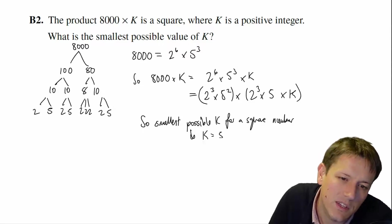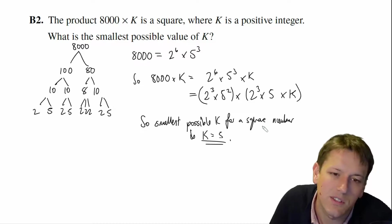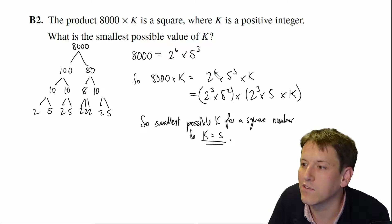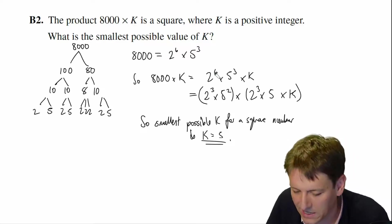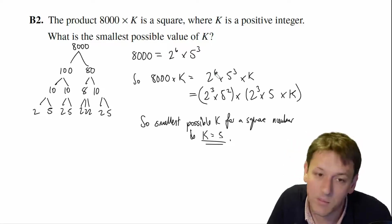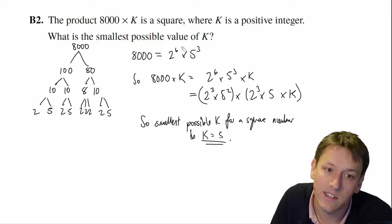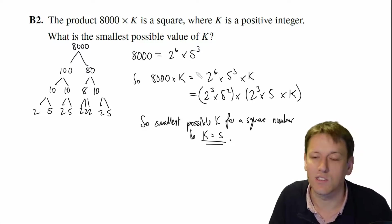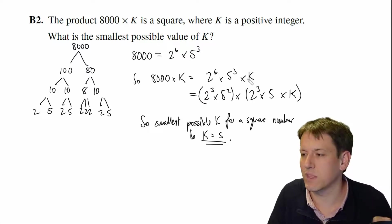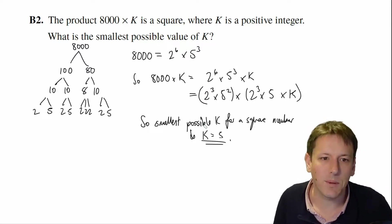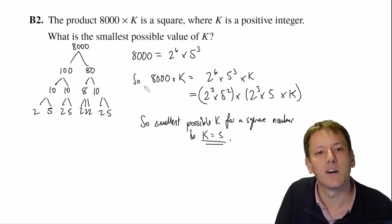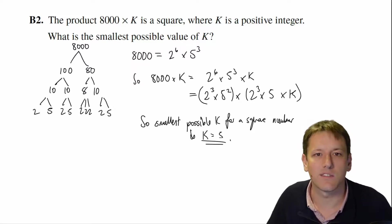If you want a super convincing argument and you know about even powers, you could just say a square number requires even powers and the quickest way to achieve that is k = 5. I think even without that, this is a clear argument for full marks if written as shown.